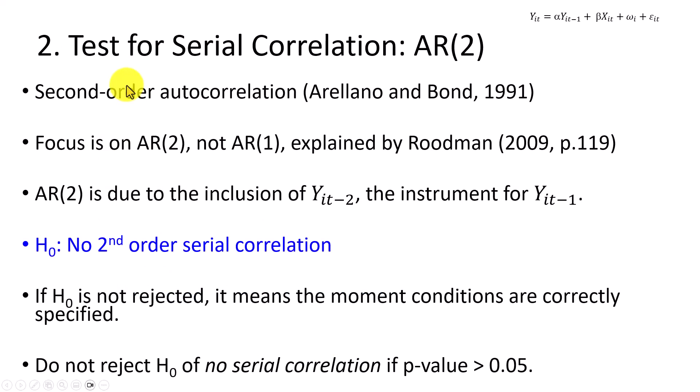So the next test is the test for serial correlation. And again, the focus here is on AR(2), not AR(1). You probably already have figured this out, because as you know, the second lag of the dependent variable naturally serves as the instrument for the first lag. And so the order of autoregression here is going to be the second one. So the null hypothesis says no second-order serial correlation. And if this is rejected, then it means that the moment conditions are correctly specified.